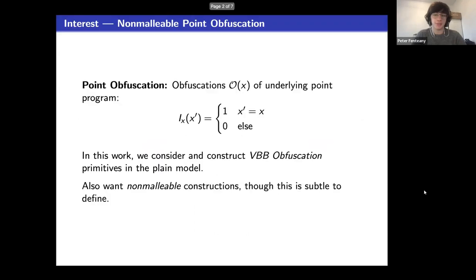Now, we're going to break down that title term by term, first starting with point obfuscation and then as an extension digital lockers. Point obfuscation is essentially obfuscation of the underlying point program that you see on your screen, which is instantiated with some point x and then should output one if and only if the testing point x prime is exactly equal to x.